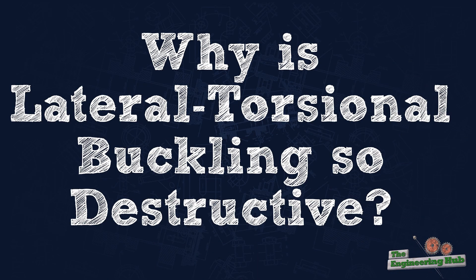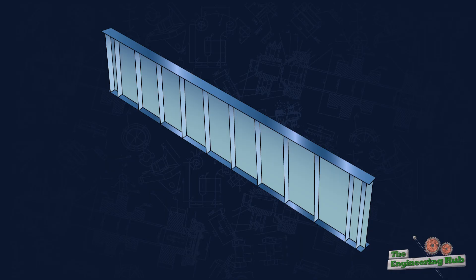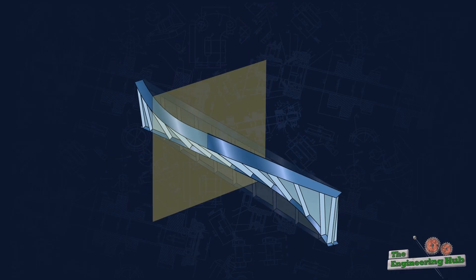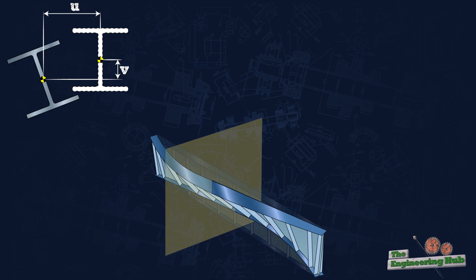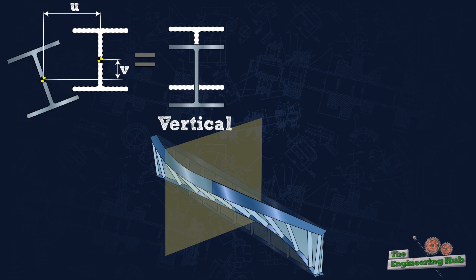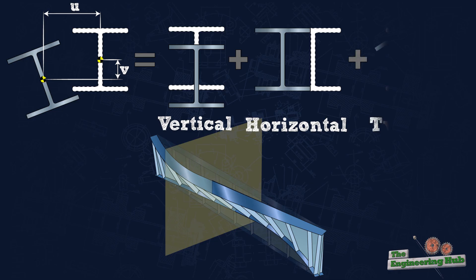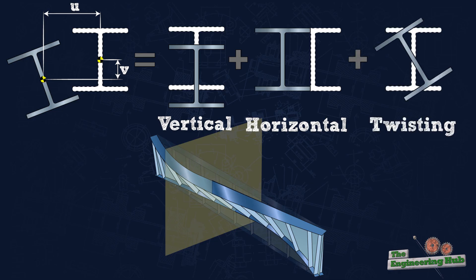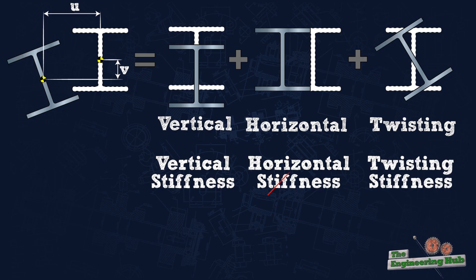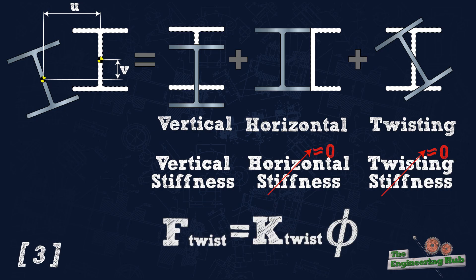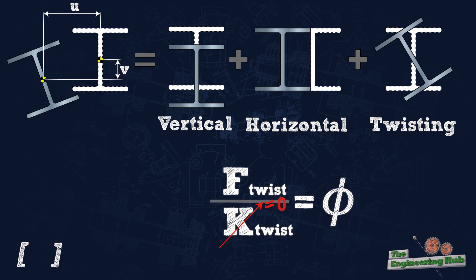But why is lateral torsional buckling so destructive? Taking a closer look at the deflected shape of a buckled beam, we can identify three types of deformations: first, the vertical deflection due to load application; secondly, the lateral deflection; and lastly, the twisting of the section. Each one of these deformations induces stresses in the material. The load initially applied in the direction where the beam is strongest gets propagated to other axes where the beam has very low stiffness. Since displacement is inversely proportional to stiffness, it takes a relatively small load to cause large deformations.